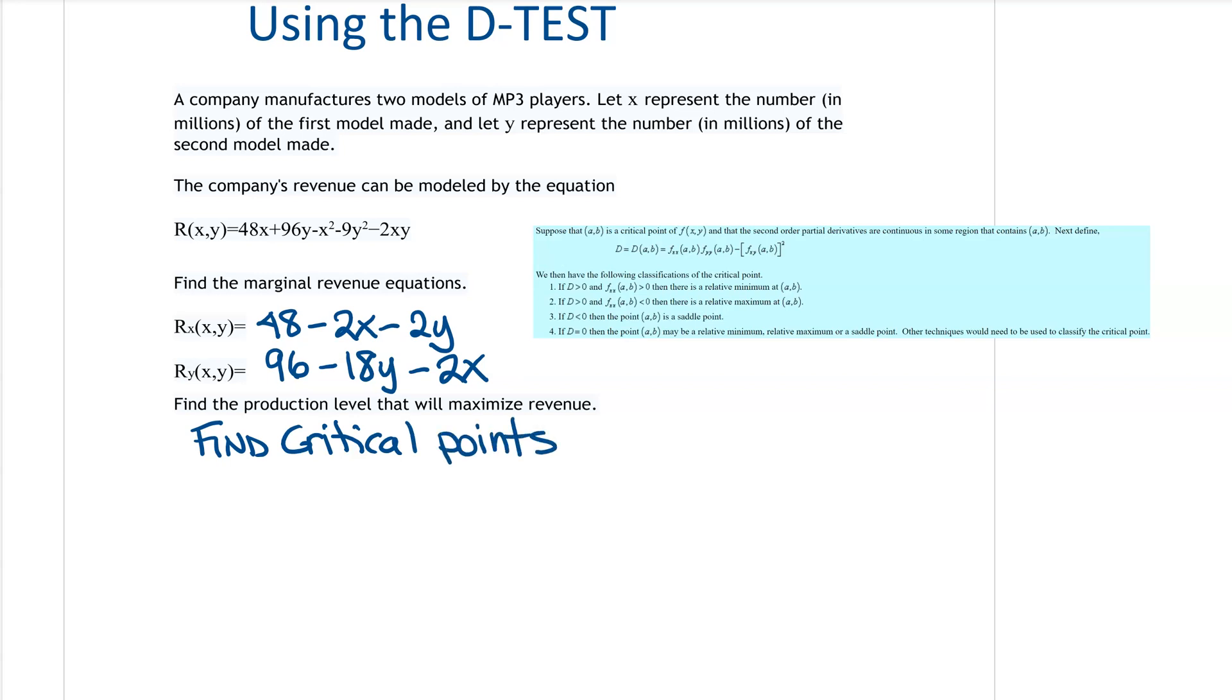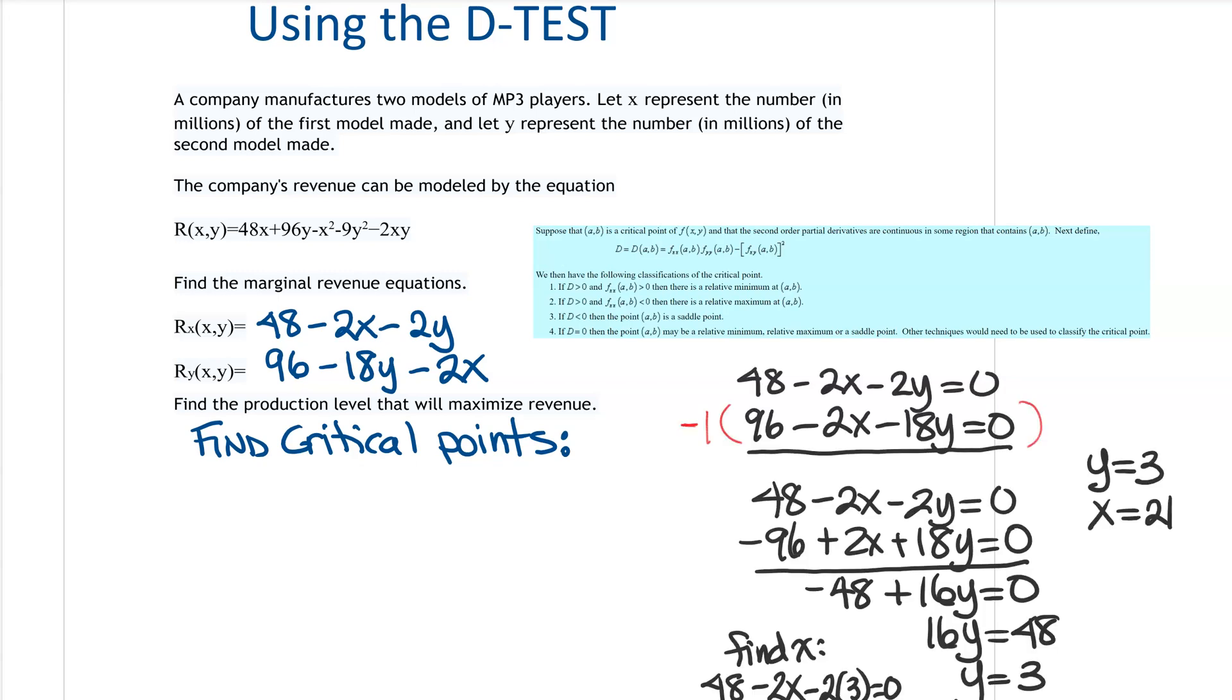I'm assuming that you can set your derivatives equal to 0 to find critical points. Okay, so we have a critical point of 21 and 3.